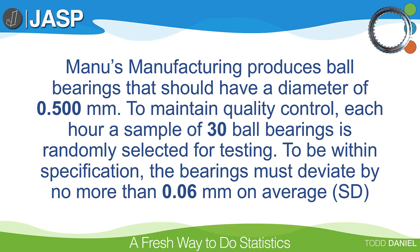Manu's manufacturing produces ball bearings that should have a diameter of 0.50 mm. To maintain quality control, each hour a sample of 30 ball bearings is randomly selected for testing. To be within specification, the bearings must deviate by no more than 0.06 mm on average. This measure of deviation will serve as our standard deviation, and the mean will be 0.5 — the measurement that the population of ball bearings should maintain.